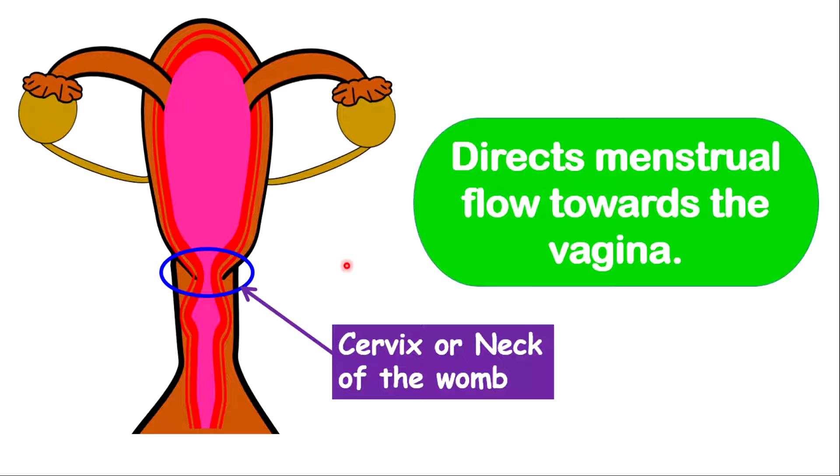Now the cervix is important in directing menstrual flow towards the vagina. So as the endometrium, which is the inner wall, breaks down, those segments or parts will be directed towards the vagina, which will eventually pass out of the body.